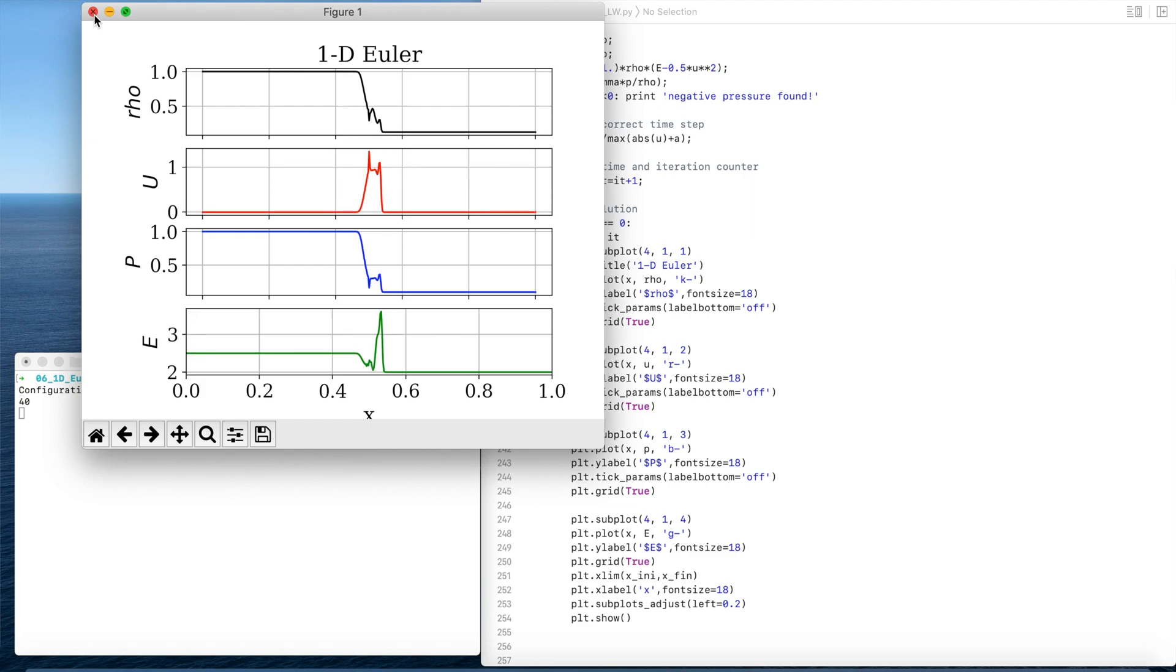Since the information is searched on both sides of the computed point j, the propagation of the information along characteristics is not taken into account in this case. This lack of physics in the numerical scheme is the cause of non-physical oscillations in the solution.